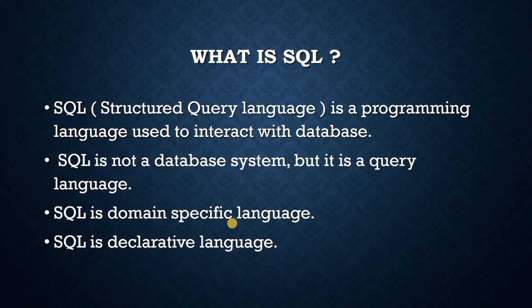SQL is a domain-specific language because we can use it only on relational databases where data is present in tables in tabular format. SQL is not a general-purpose language because we cannot use it on multiple areas. C++, Java, Python, HTML — these are general-purpose programming languages. We can use Java on Snowflake for creating functions or procedures, or use Java in Spring Boot as well. But SQL is domain-specific, used only on relational databases.